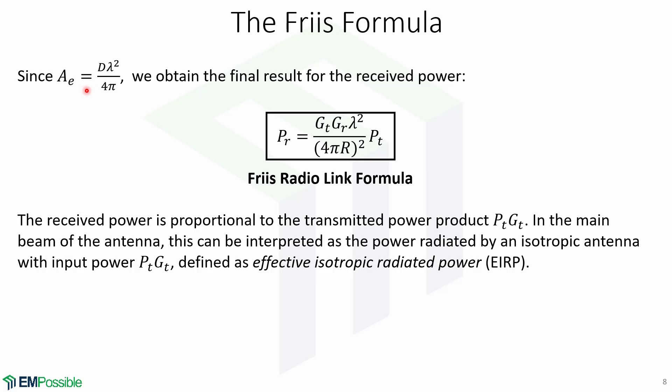Since the effective area AE is equal to Dλ² over 4π, we obtain the final result for the received power: PR equals GT times GR times λ² over (4πr)² times Pt. This is known as the Friis radio link formula, and it addresses the fundamental question of how much power is received by a radio antenna. This formula should be interpreted as the maximum possible power received.